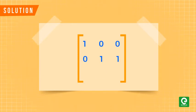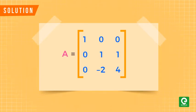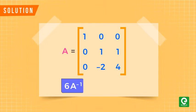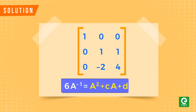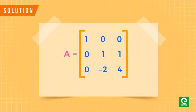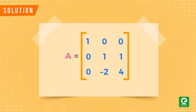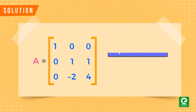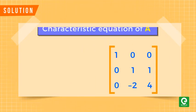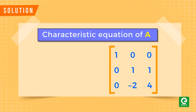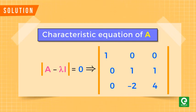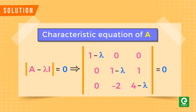In the question, we are given matrix A and the equation 6 times A inverse equals A squared plus cA plus dI. From the theory we just learned, we can see that A is a square matrix. Writing the characteristic equation for this matrix, we get: determinant of (A minus lambda I) equals zero, expanding as: (1 minus lambda)(0)(0), (0)(1 minus lambda)(1), (0)(-2)(4 minus lambda) equals zero.